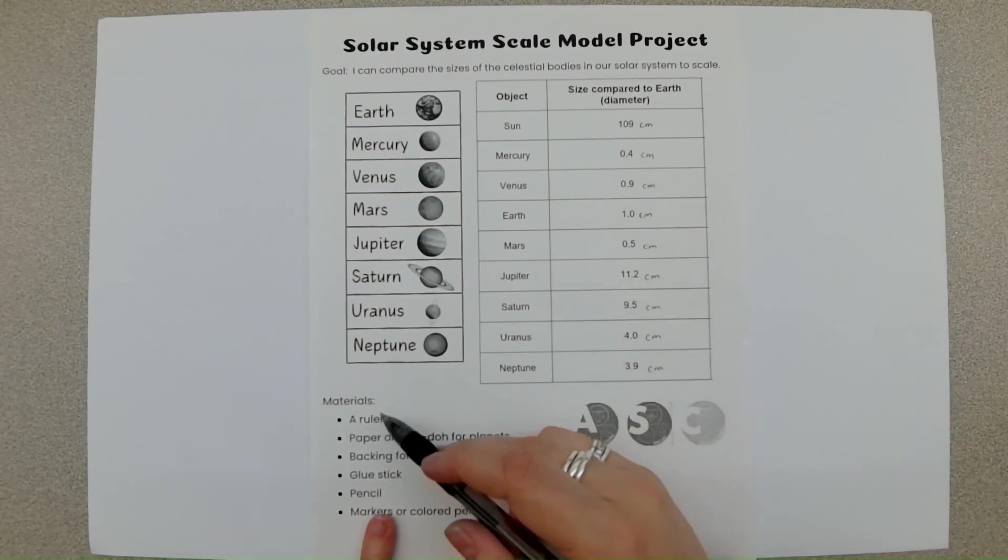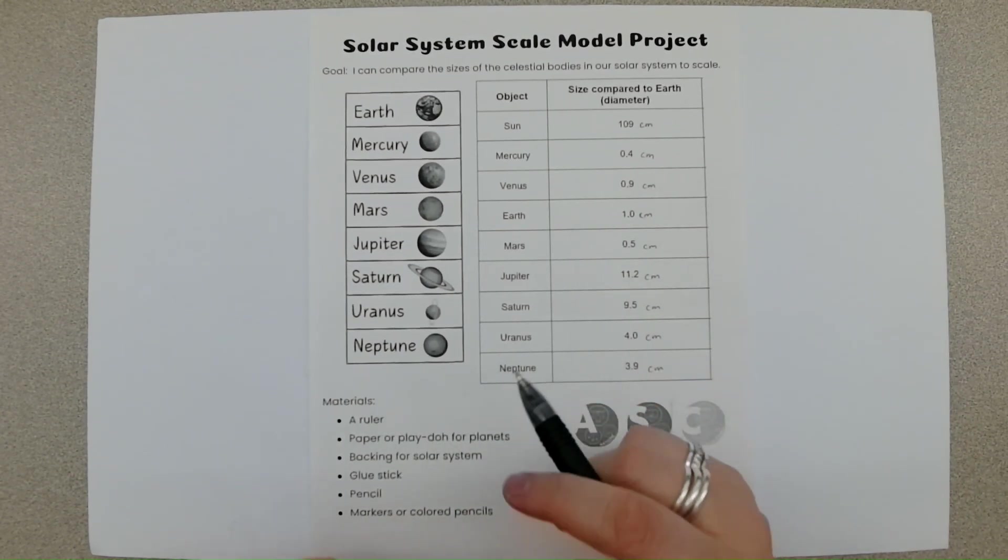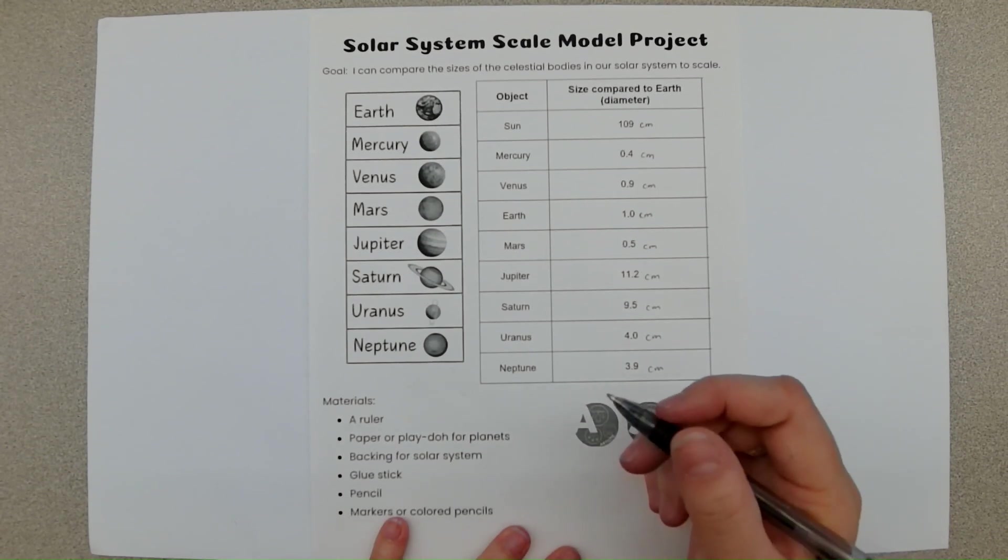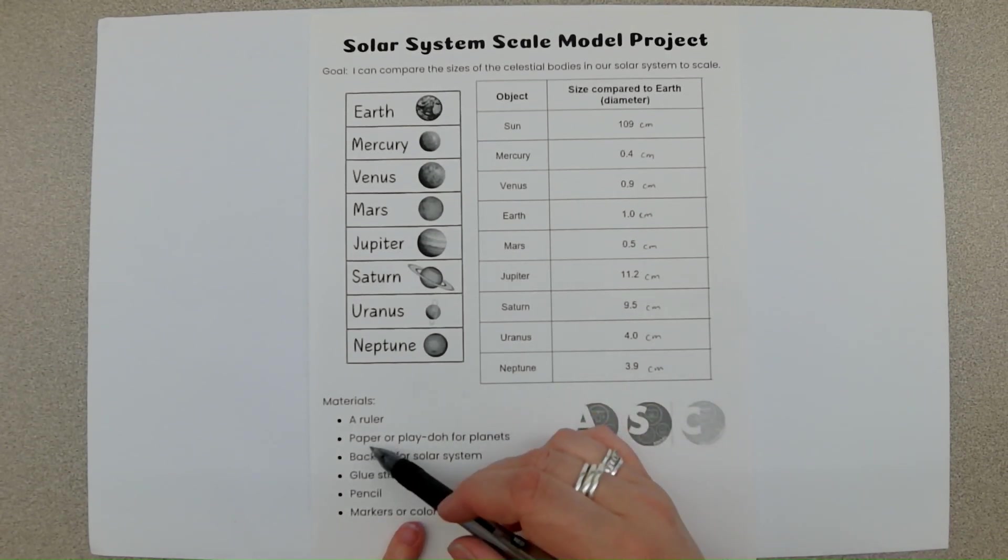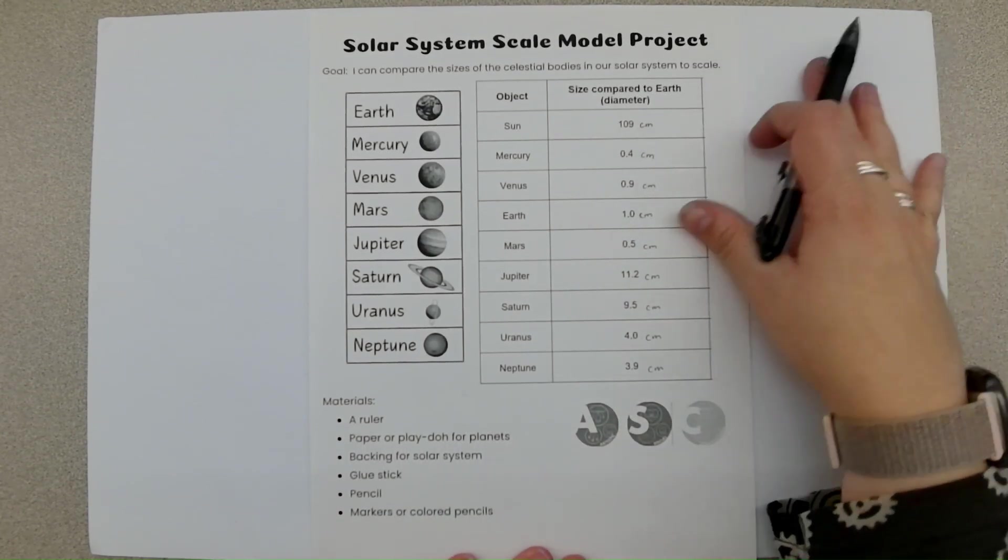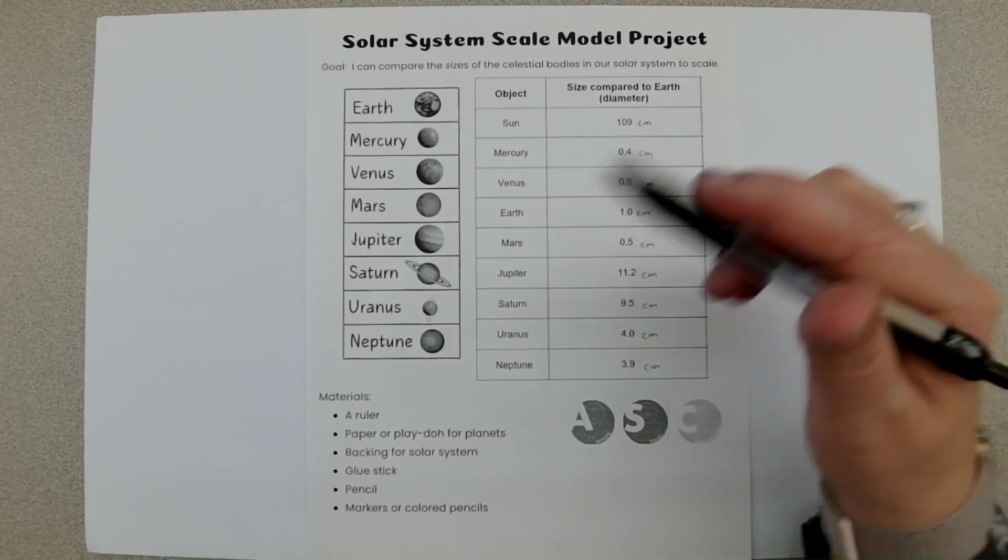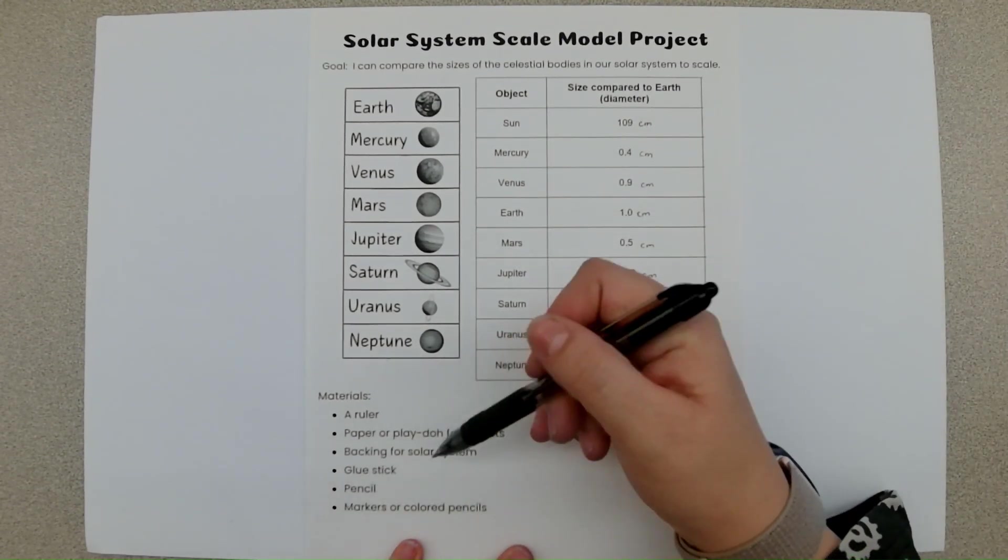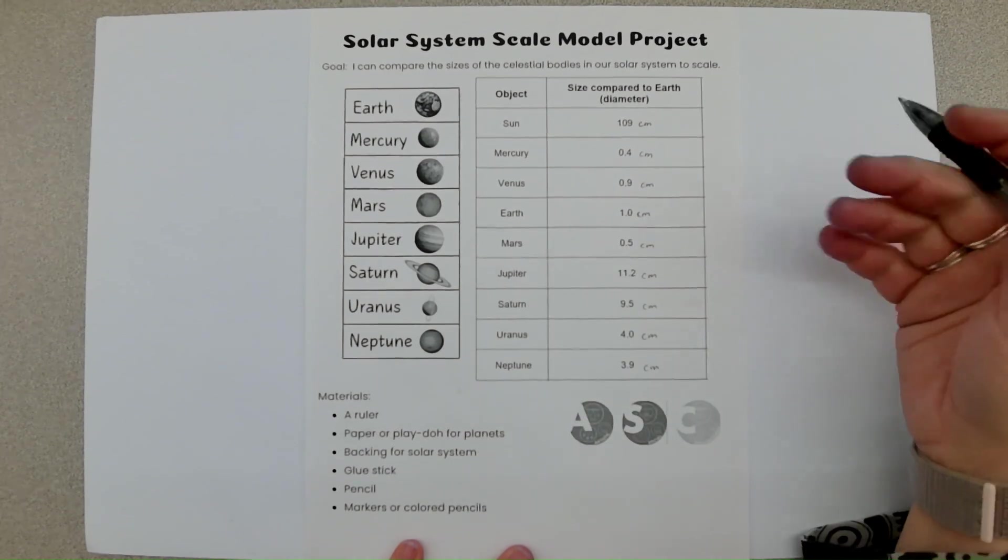So what we're going to do is you can use a ruler to measure each of these things, measure them on your pieces of paper. We're going to use paper for hours. If you'd like to try this at home using Play-Doh, that's fine. And then for our solar system backing, we're just going to use a piece of white paper that I'm going to give you in class. We have glue sticks, pencils, also markers and colored pencils so we can decorate these afterwards.